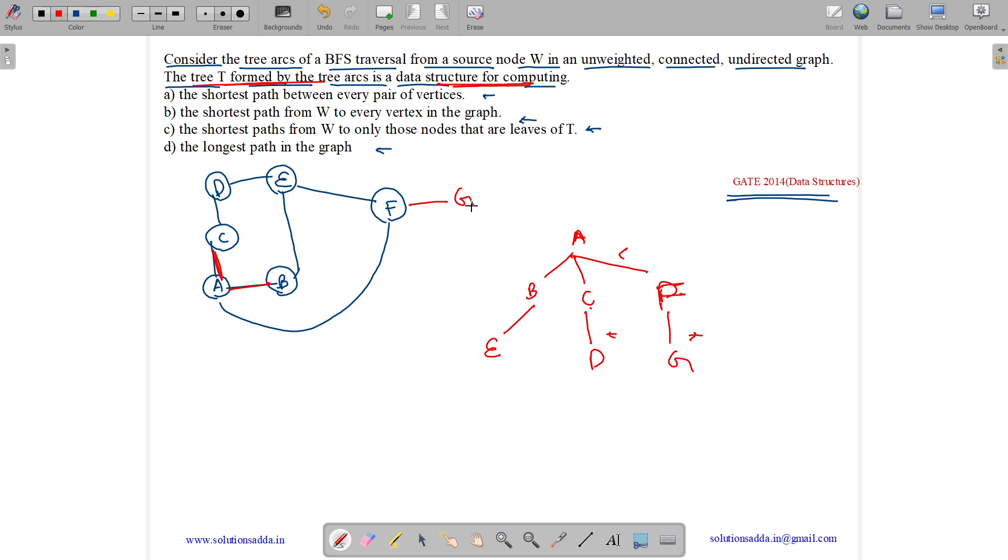The path from A to G can go A, C, D, E, F, G. But there is another path: A, F, G. And this path is present in the BFS traversal. It will start from one node and find the shortest path. So BFS traversal finds the shortest path to every vertex in the graph from W. So answer is option B.